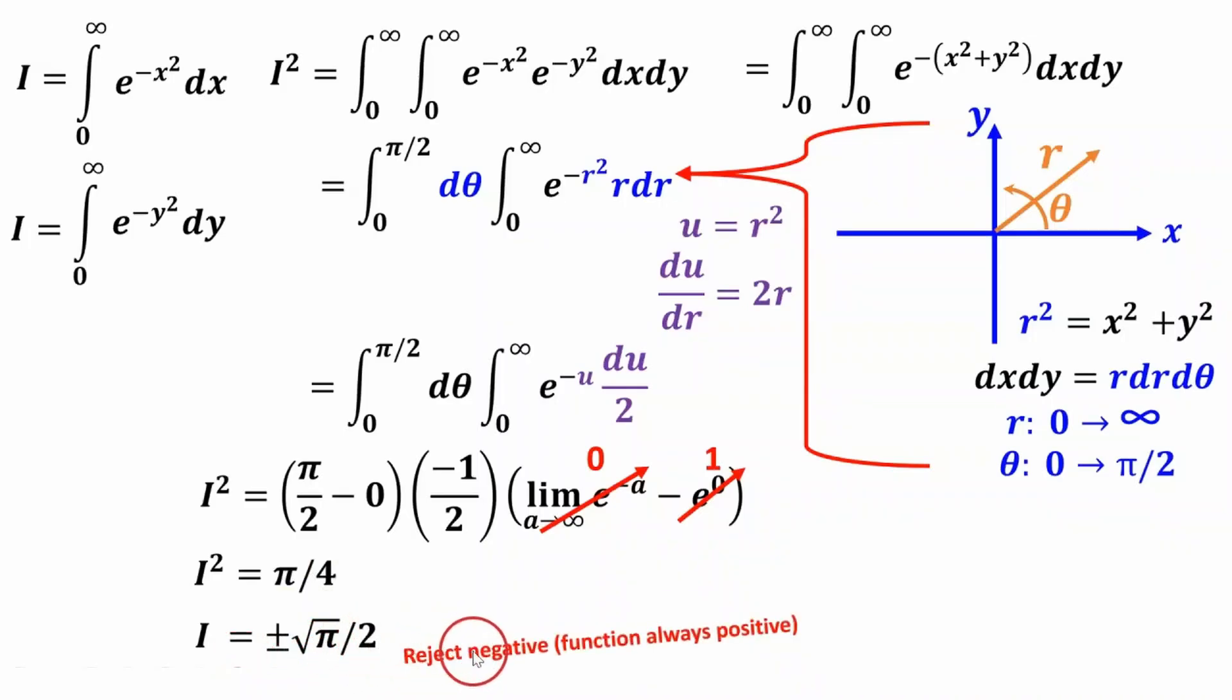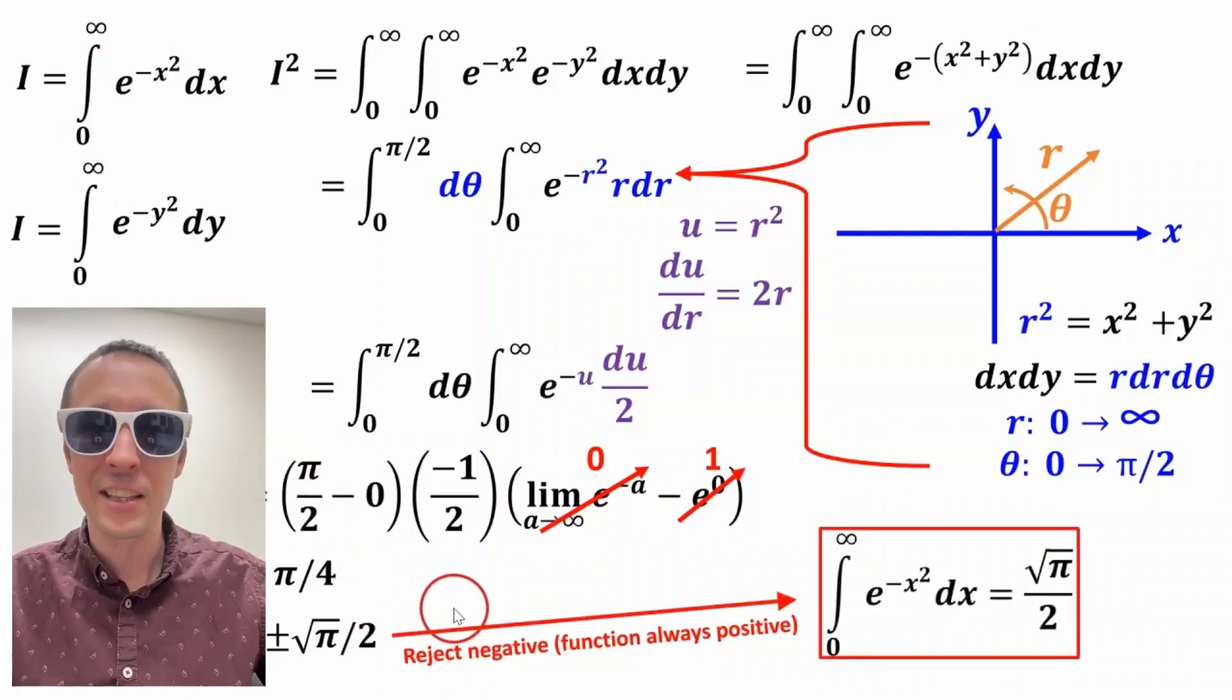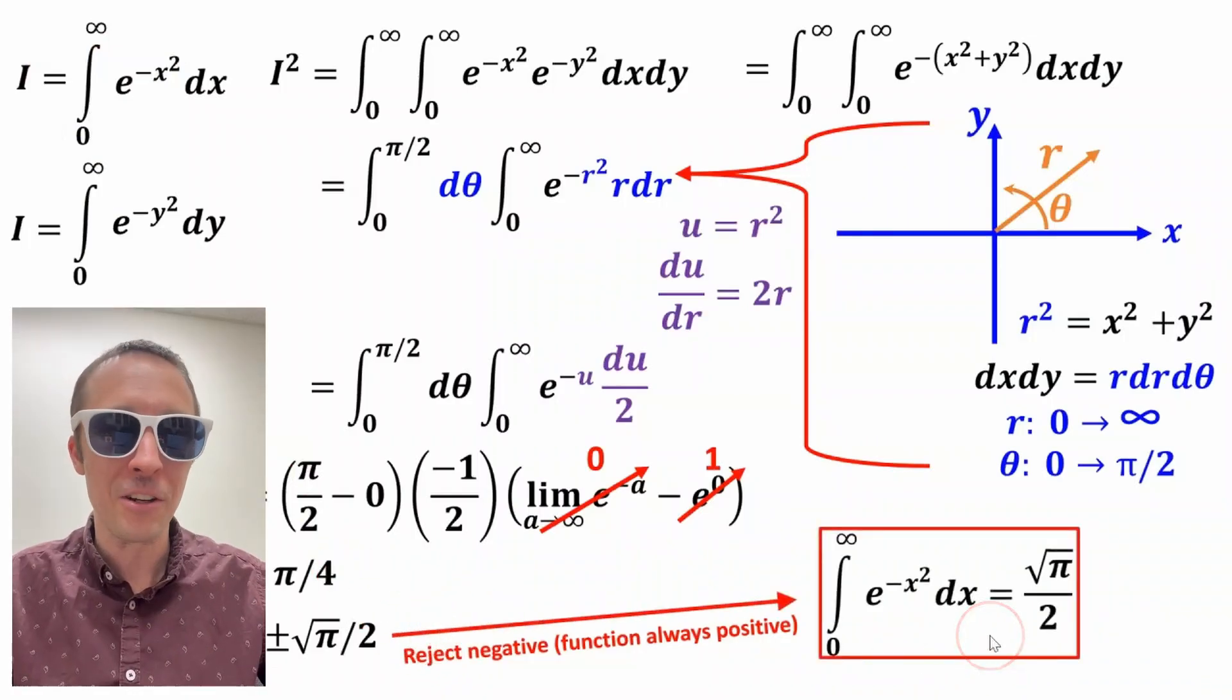But we can readily reject the negative sign. We could use the squeeze theorem, but this function, like e to the negative x squared, it's always above the horizontal axis. So take the positive one, reject the negative, and we've got the integral and we're done.